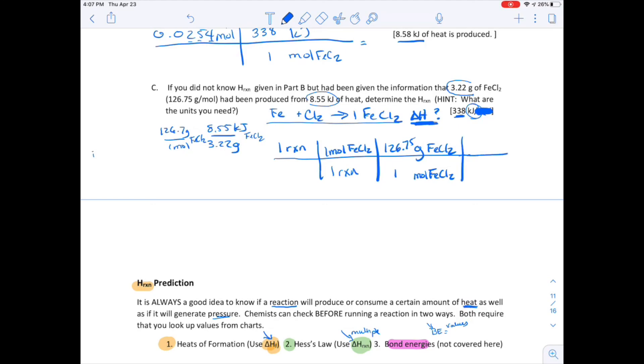And then remember, I have these two numbers tied together. So then I can say that in 3.22 grams of FeCl2, I have 8.55 kilojoules. Now if you check the units on this, you end up with 8.55 kilojoules. And that's how you figure out for one reaction what the delta H value is.